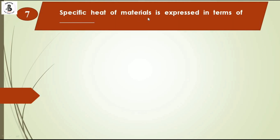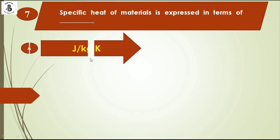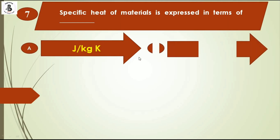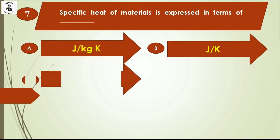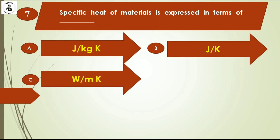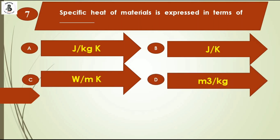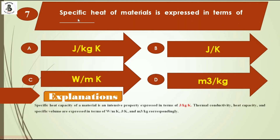Specific heat of materials is expressed in terms of: option A Joule per kg Kelvin, option B Joule per Kelvin, option C Watt per meter Kelvin, option D meter cube per kg. The specific heat capacity of materials is an intensive property expressed in terms of Joule per kg Kelvin. Thermal conductivity, heat capacity, and specific volume are expressed in Watt per meter Kelvin, Joule per Kelvin, and meter cube per kg correspondingly. So the right answer is option A, Joule per kg Kelvin.